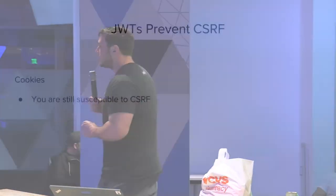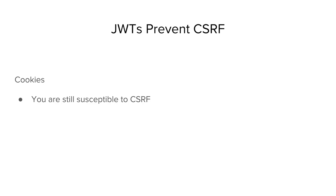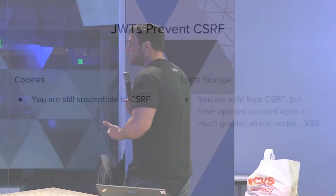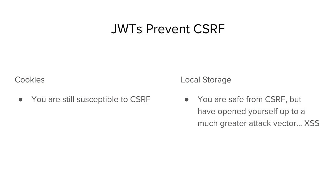A lot of people think JSON Web Tokens can help prevent CSRF. The truth is, this has absolutely nothing to do with JSON Web Tokens — it has everything to do with where your authentication data is being stored. If you're storing authentication information inside a cookie, you are always going to be susceptible to CSRF. The reason is that if someone tricks you into viewing a page on that website, your browser will send your authentication information to the website no matter what — that's the nature of cookies. If you're using local storage, on the other hand, you're safe from CSRF because local storage purely works through a JavaScript API.